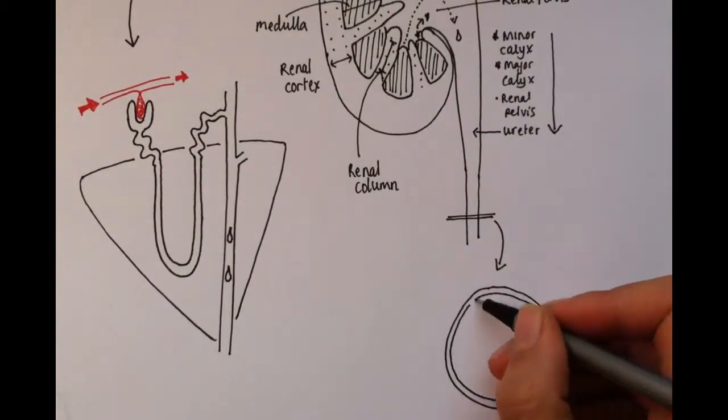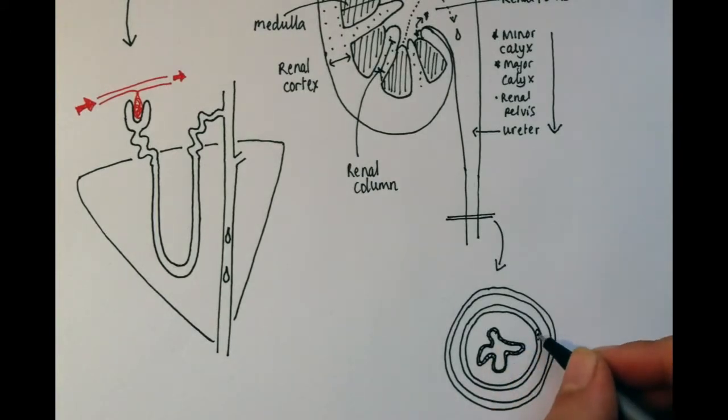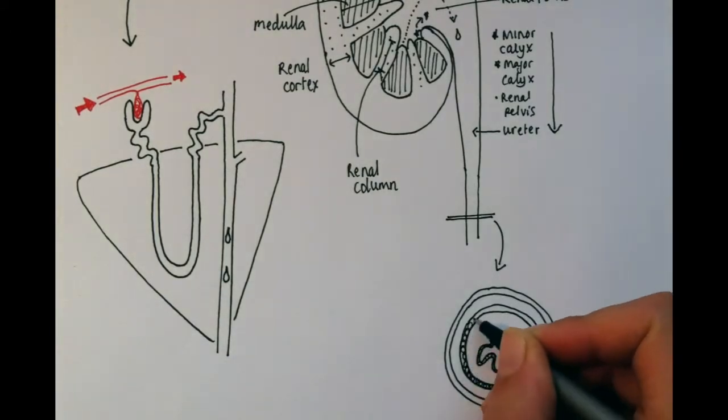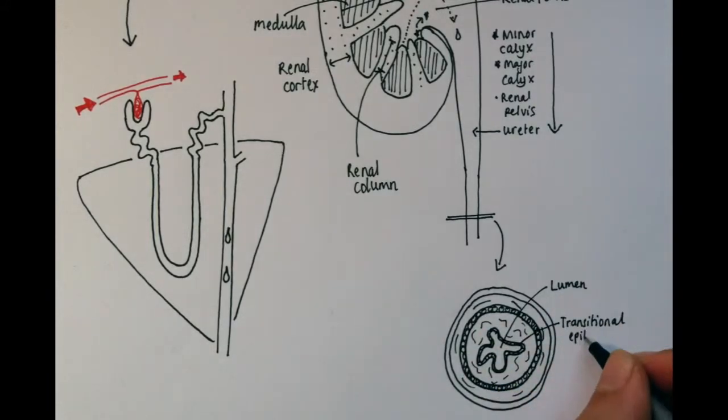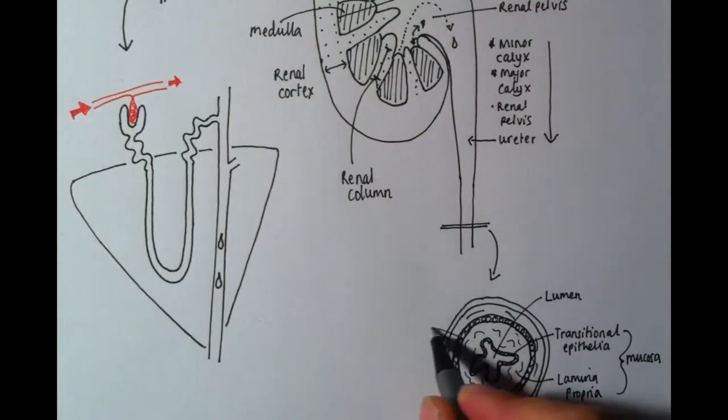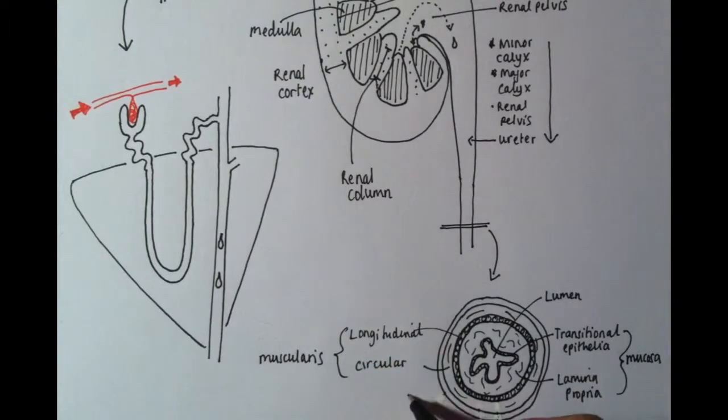Connecting the kidneys and the bladder is the ureters. We have a pair of ureters that run down through the abdominal cavity into the pelvis to connect to the bladder. The lumen of the ureters is lined by transitional epithelium. This, with the lamina propria, makes up the mucosa. The ureters can help propel urine by peristalsis, thanks to the longitudinal and circular muscle layers.